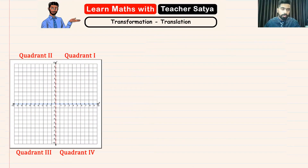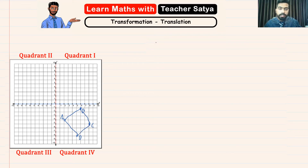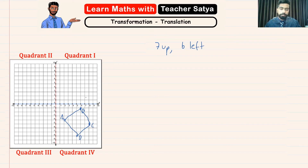Now let's do one more question. I have a shape with point A, point B, point C, and point D — this is a quadrilateral. Let's say I have to move this original shape 7 up and then 6 to the left. So I'm going to translate this picture 7 points up and 6 points left.